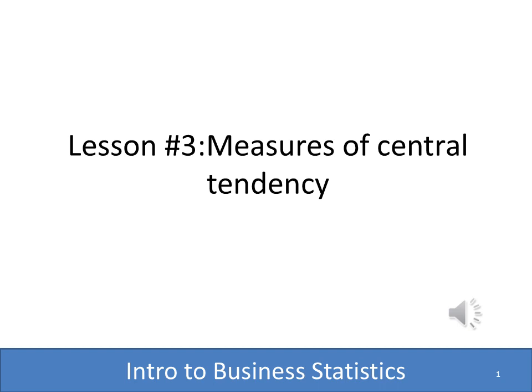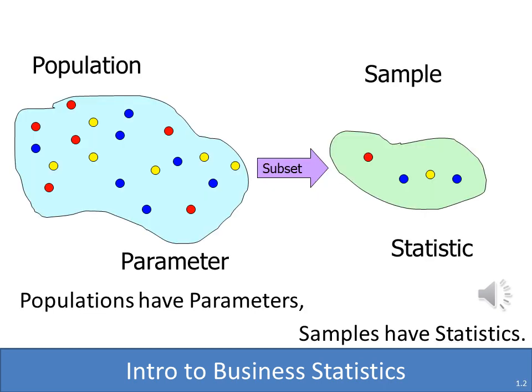We're going to start with a little review and then discuss measures of central tendency in this lesson. Remember in the previous lesson we discussed the difference between a population and a sample. A population is everybody in whatever you're trying to survey — every college student at a college, every person in a class, every person in the United States. A sample is just a portion of that, a subset of that.